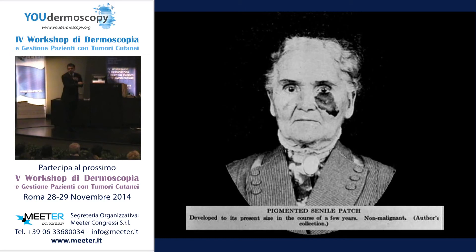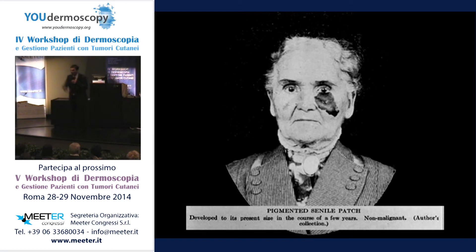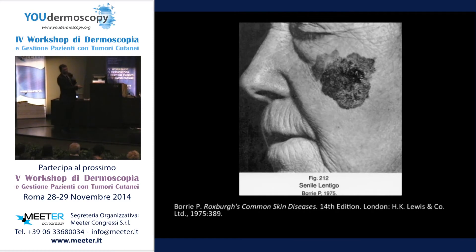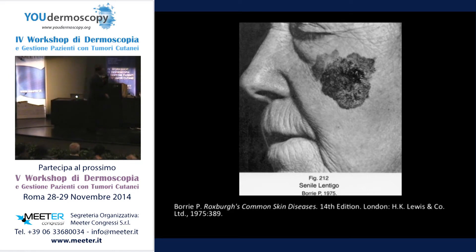What is your diagnosis here? Melanoma — any doubt? No. Now look what they wrote: 'Pigmented senile patch, non-malignant.' Because they didn't think it was a melanoma since it was not ulcerated and was flat. And here, from 1975: 'Senile lentigo.' Do you think that this is a senile lentigo? No. So this was the era of underdiagnosis.